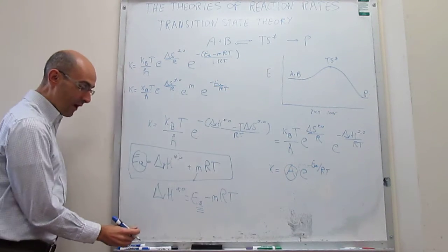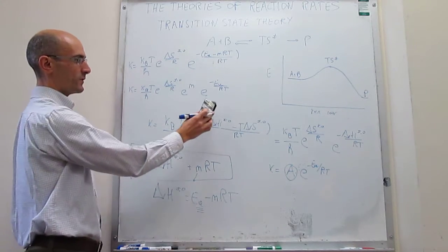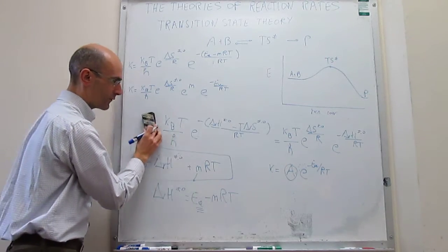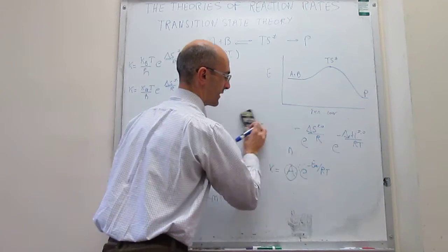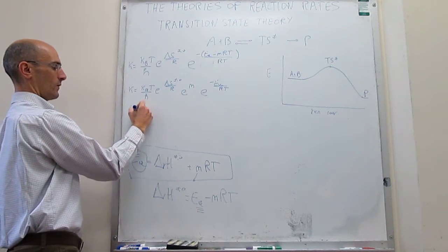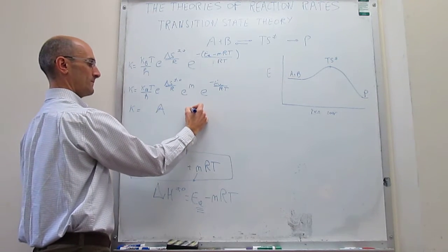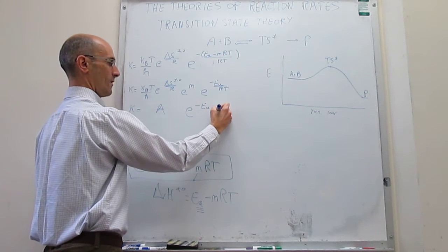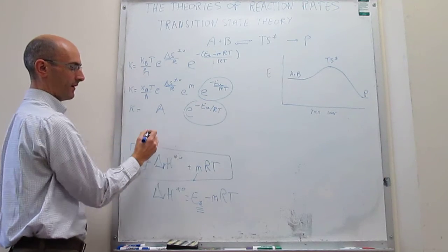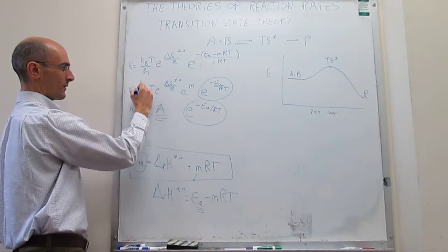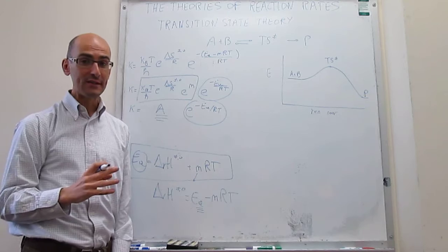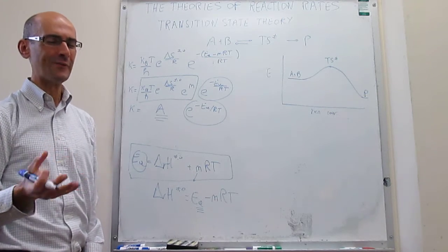This expression is a hybrid between Arrhenius and transition state theory. It can be compared directly with the Arrhenius expression so that we can see what the pre-exponential factor actually is. Because we've incorporated the activation energy, the term e to the minus E_A over RT is identical to the Arrhenius term, which means the pre-exponential factor corresponds to K_B T over h times e to the delta S of activation over R times e to the m.